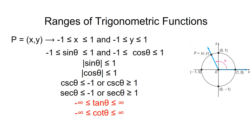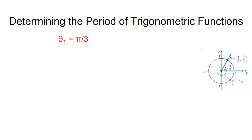The same is true for secant theta. The ranges of tangent theta and cotangent theta are both the set of all real numbers. We now move on to the topic of periodicity. A periodic function is one that repeats itself at fixed intervals, and we'd like to examine the periodicity of trigonometric functions.